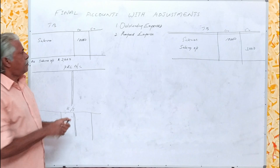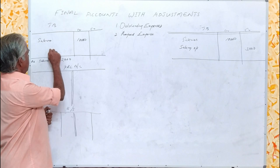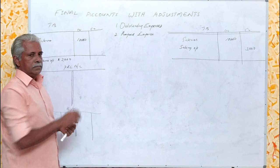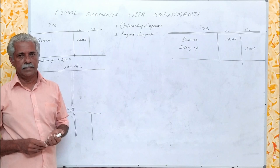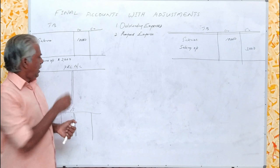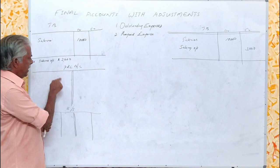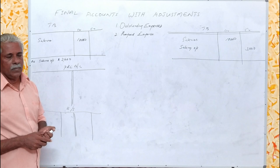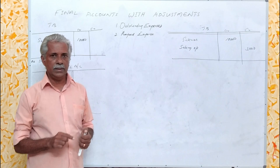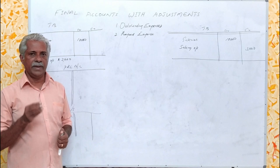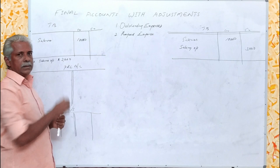In the first instance, a part of the trial balance is given where salary appeared in the debit column at rupees 10,000. It is given in the adjustment that outstanding salary exists and the amount outstanding is rupees 3,000. How will these items appear in the final accounts, namely the profit and loss account and the balance sheet? The outstanding salary appears outside the trial balance, meaning this is an unrecorded event. In other words, the 10,000 does not include the outstanding rupees 3,000.